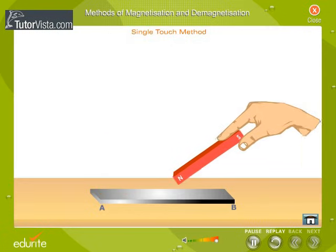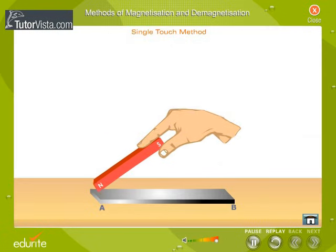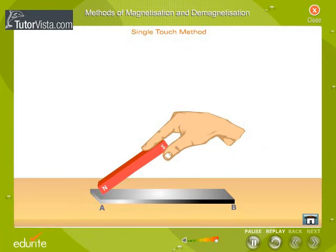Stroke the soft iron piece with the bar magnet. When the magnet reaches B, lift it and place it back to position A and repeat the process several times.